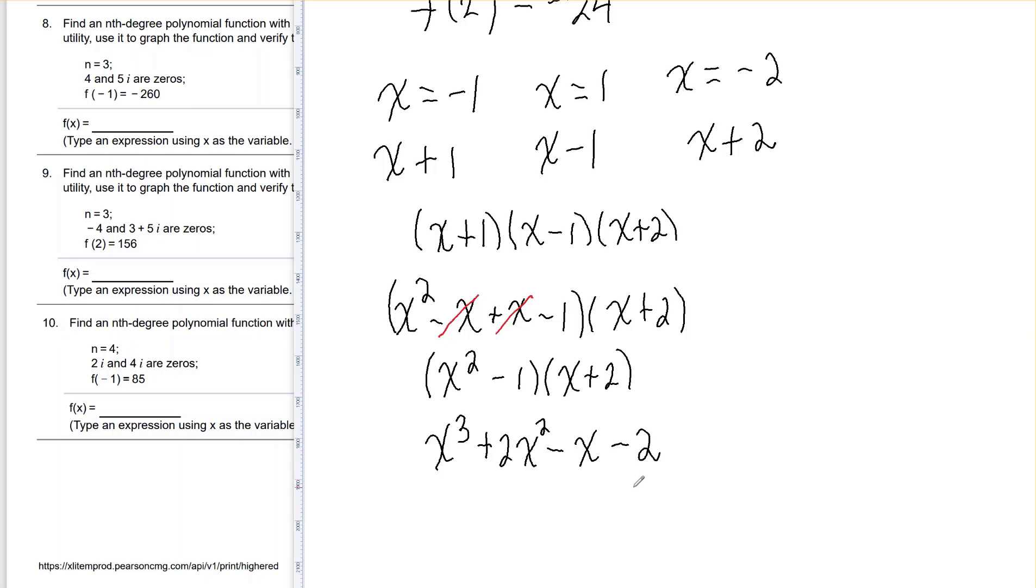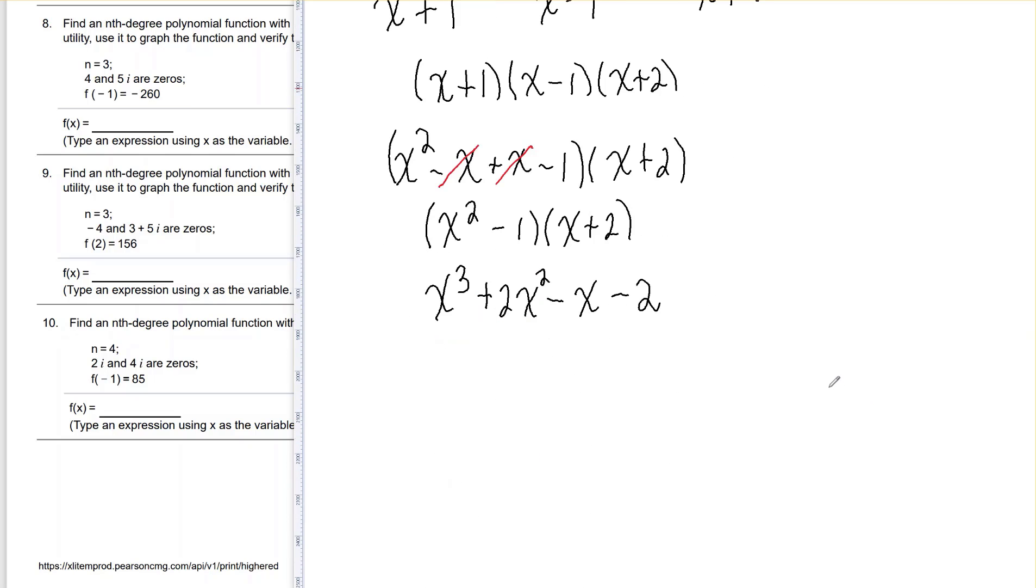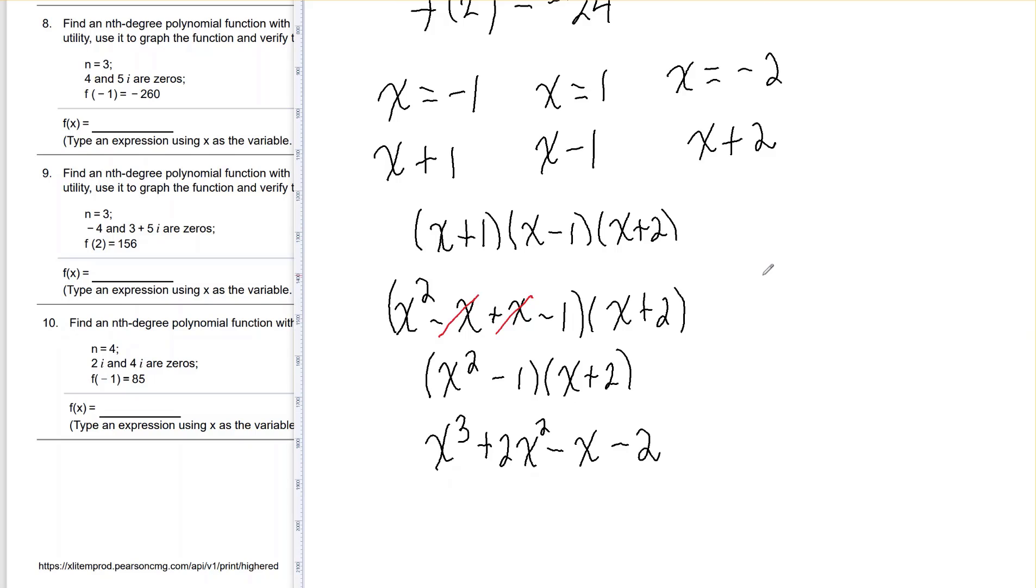However, remember the other piece of information they gave us, which is f of 2 has to come out to negative 24.